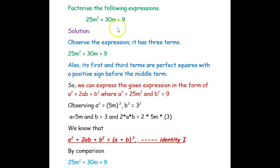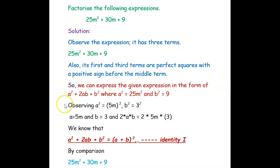Solution. First, you have to observe the expression. It has three terms, and also the first term and the third term — that is, the coefficient of the first squared term and the constant term — both are perfect squares, and there is a positive sign in front of the coefficient of the m term.